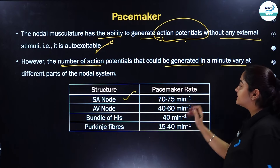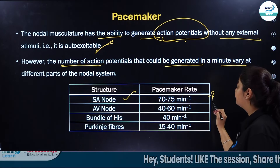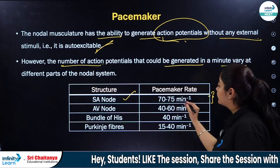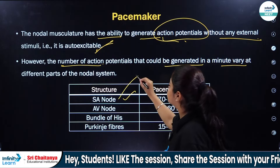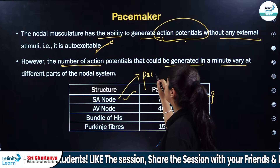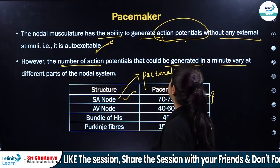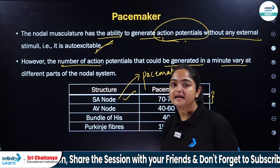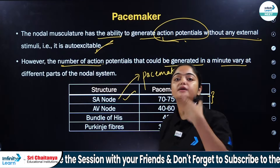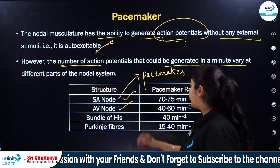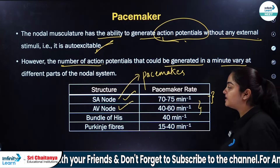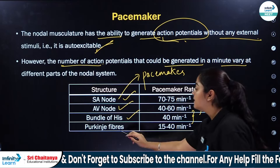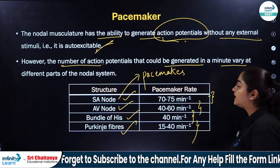Majorly, if we talk about the SA node — the SA node's pacemaker rate is 70 to 75 per minute. That is why the SA node is basically your pacemaker, responsible for generating action potentials. The AV node, your pace setter, generates 40 to 60 per minute. The bundle of His or AV bundle generates 40 per minute. Purkinje fibers generate 15 to 40 per minute.